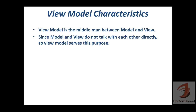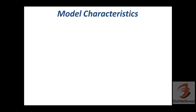You can imagine the ViewModel as a broker between Model and View. All the data present inside the Model that should be represented on the View is handled through the ViewModel. There are special elements such as Commands, Observable Collections, and the IDataErrorInfo interface that help achieve communication between Model and View. The ViewModel contains zero UI elements — only C# logic and data representation logic.